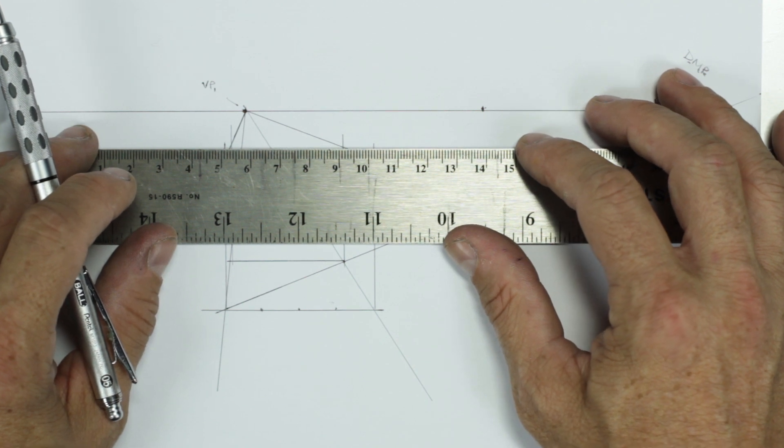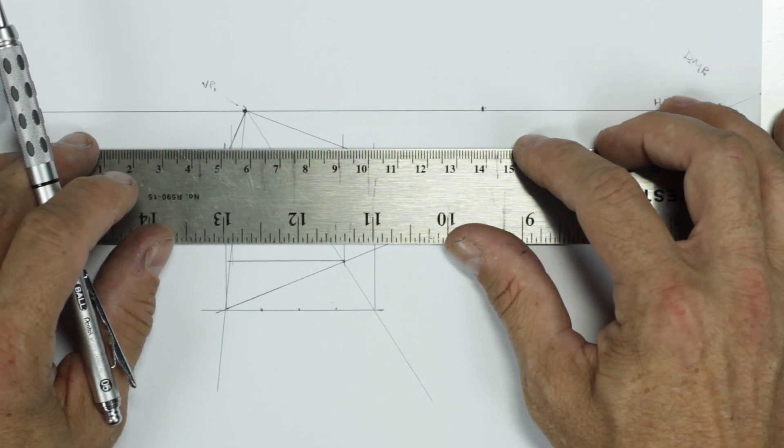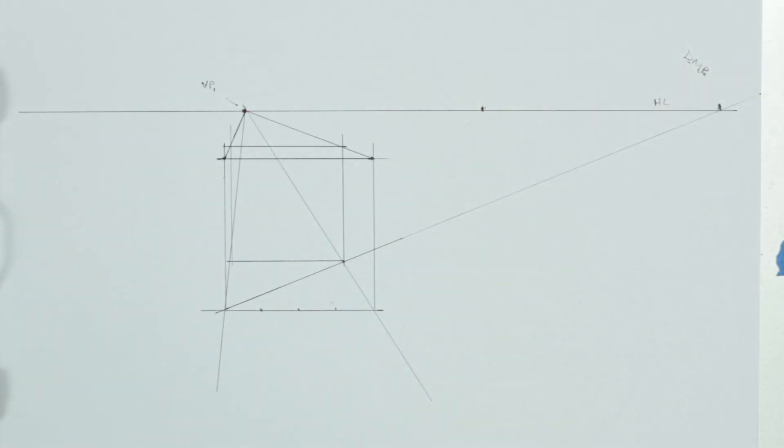And one more horizontal line across here, parallel with our horizon line. And we have now built a perfect cube.